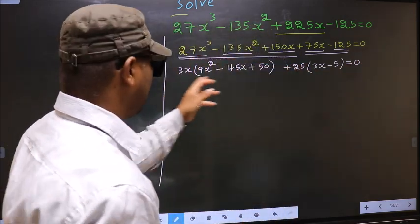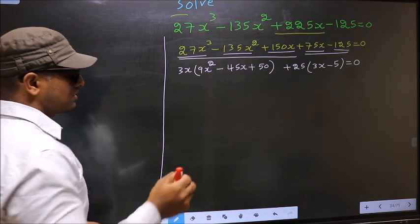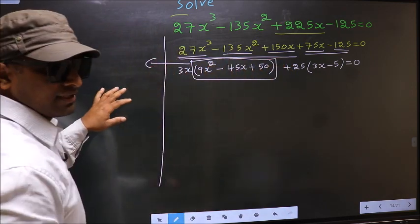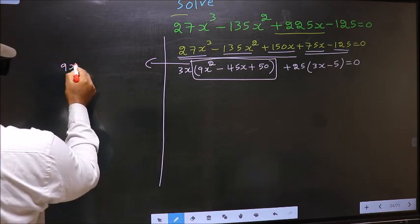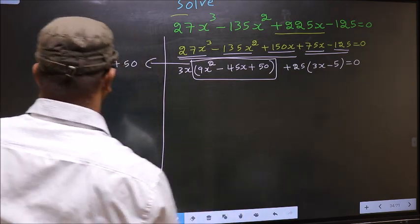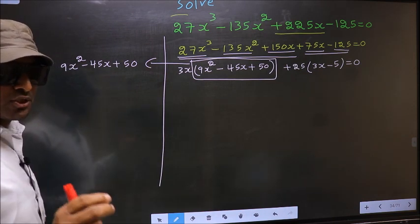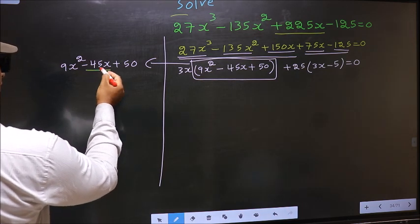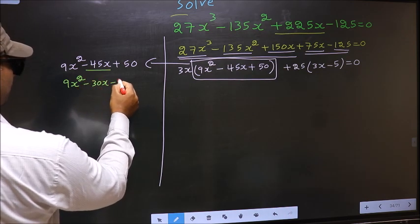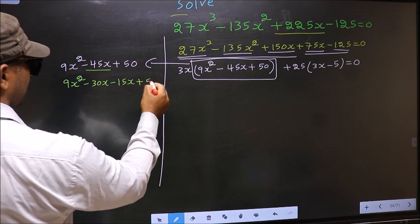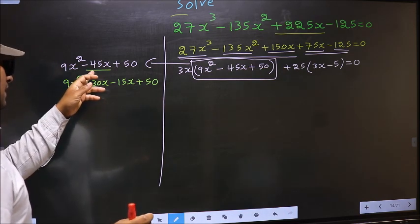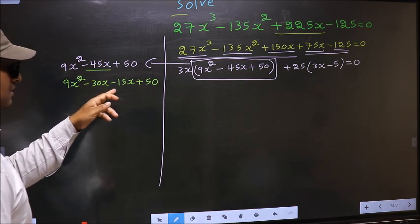Now in this equation we have come across a quadratic, so I will factorize it here. That is 9x² minus 45x plus 50. To factorize this, we should split the middle term, that is minus 45x. So in place of minus 45x, I write minus 30x minus 15x plus 50. I am not doing full factorization steps — directly I have split minus 45x into minus 30x minus 15x.